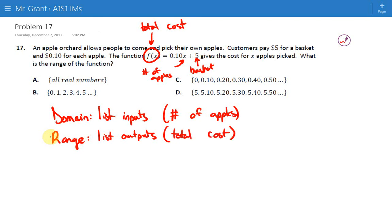So let's think of what could happen here. If you look at your domain, we use braces to list individual numbers. The smallest amount of apples you could pick is 0 apples. You could also pick 1 apple, or 2 apples, or 3 apples, or anything like that.